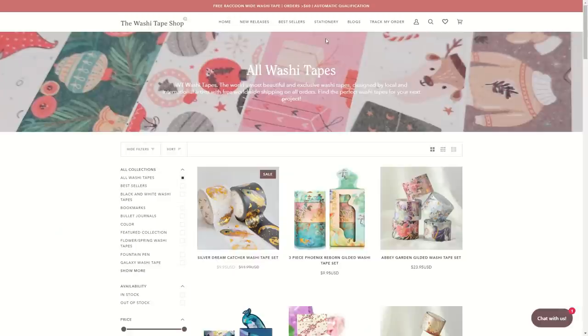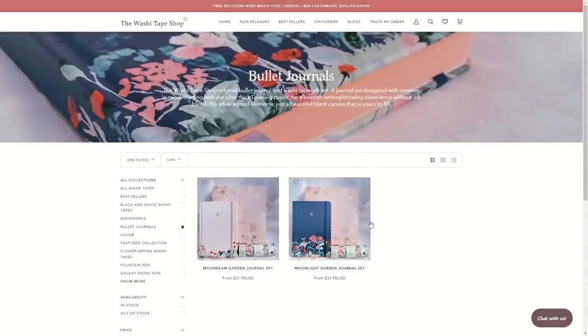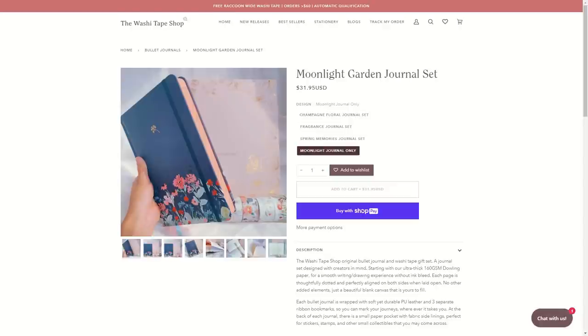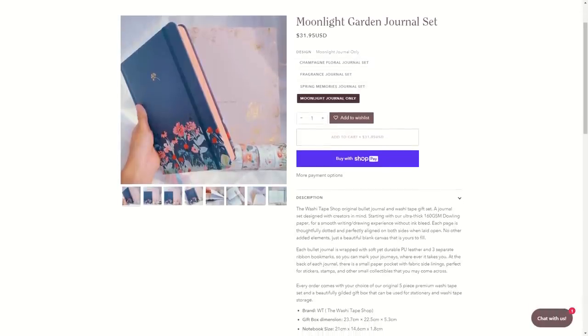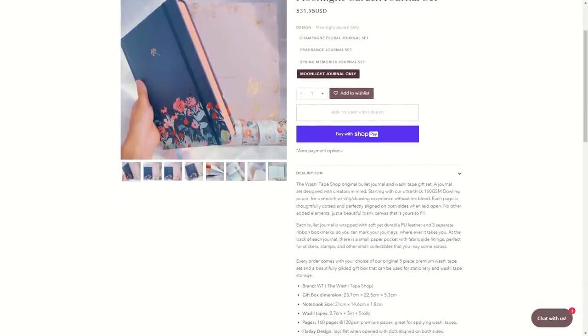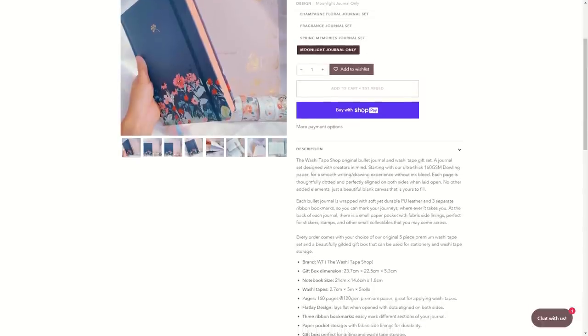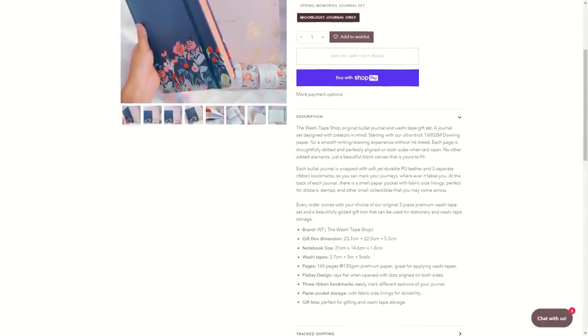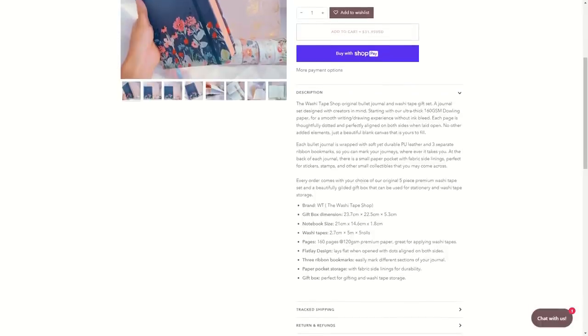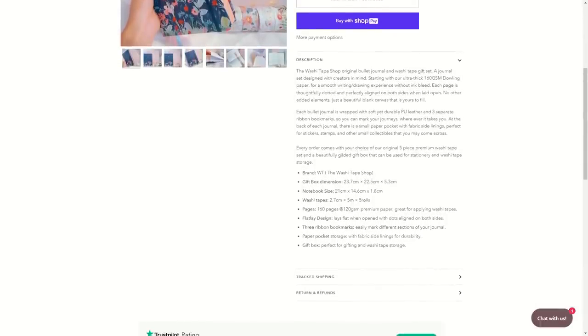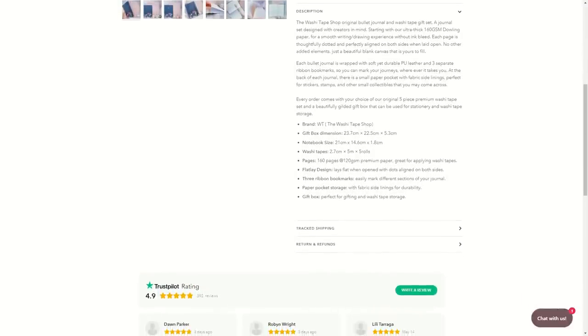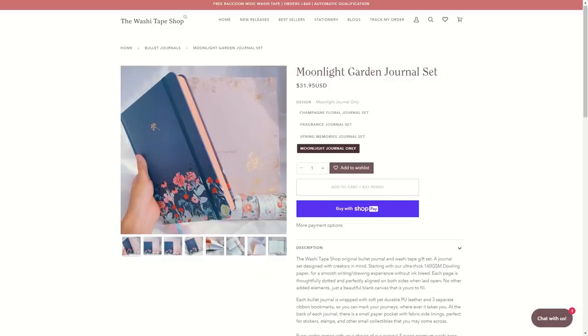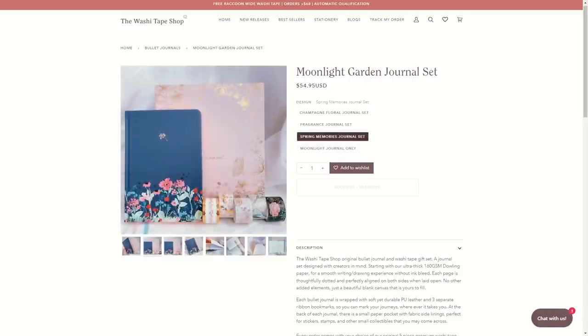Having a look at our claims for this notebook, it tells us on the website that the notebook size is 21 by 14.6 by 1.8 centimeters. The set comes with five rolls of five meter washi tape, which are 2.7 centimeters across. The notebook itself is 160 pages with 120 GSM paper. They say it is premium paper and great for applying washi tapes. We have a flat lay design, so it lays flat when opened, and the dots should align on both sides of the page. We have three ribbon bookmarks to easily mark different sections of your journal, a paper pocket storage with fabric side linings for durability, and at the time of filming this, the journal itself is $31.95 US, and the fragrance journal set, which comes with the washi tape, is $54.95 US.